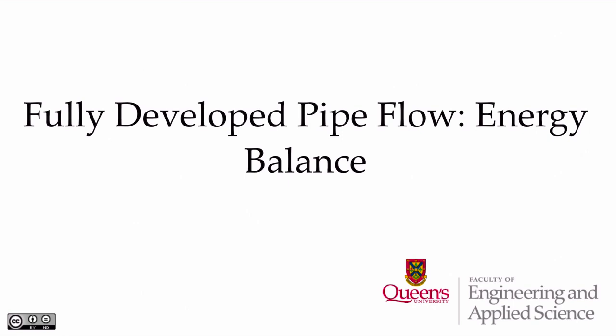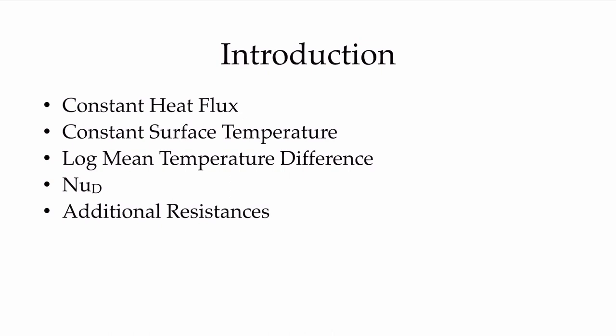In this video we're going to look at fully developed pipe flow and the energy balance in pipes experiencing both fully developed flow and fully developed temperature profiles. We'll look at constant heat flux, then constant surface temperature, which brings us to the log mean temperature difference. We'll also look at available correlations for the Nusselt number and consider what happens when additional resistances are added to our systems.